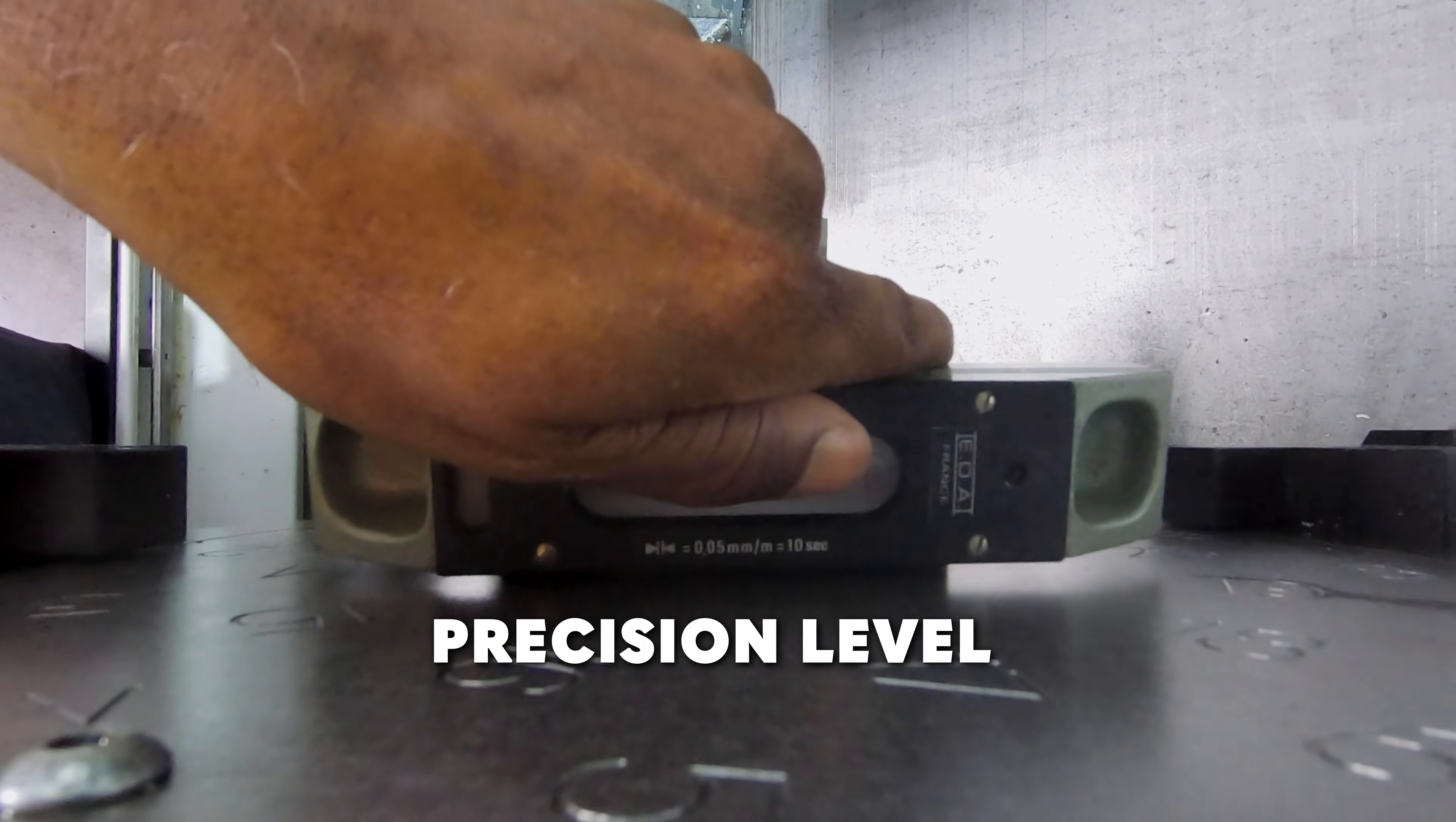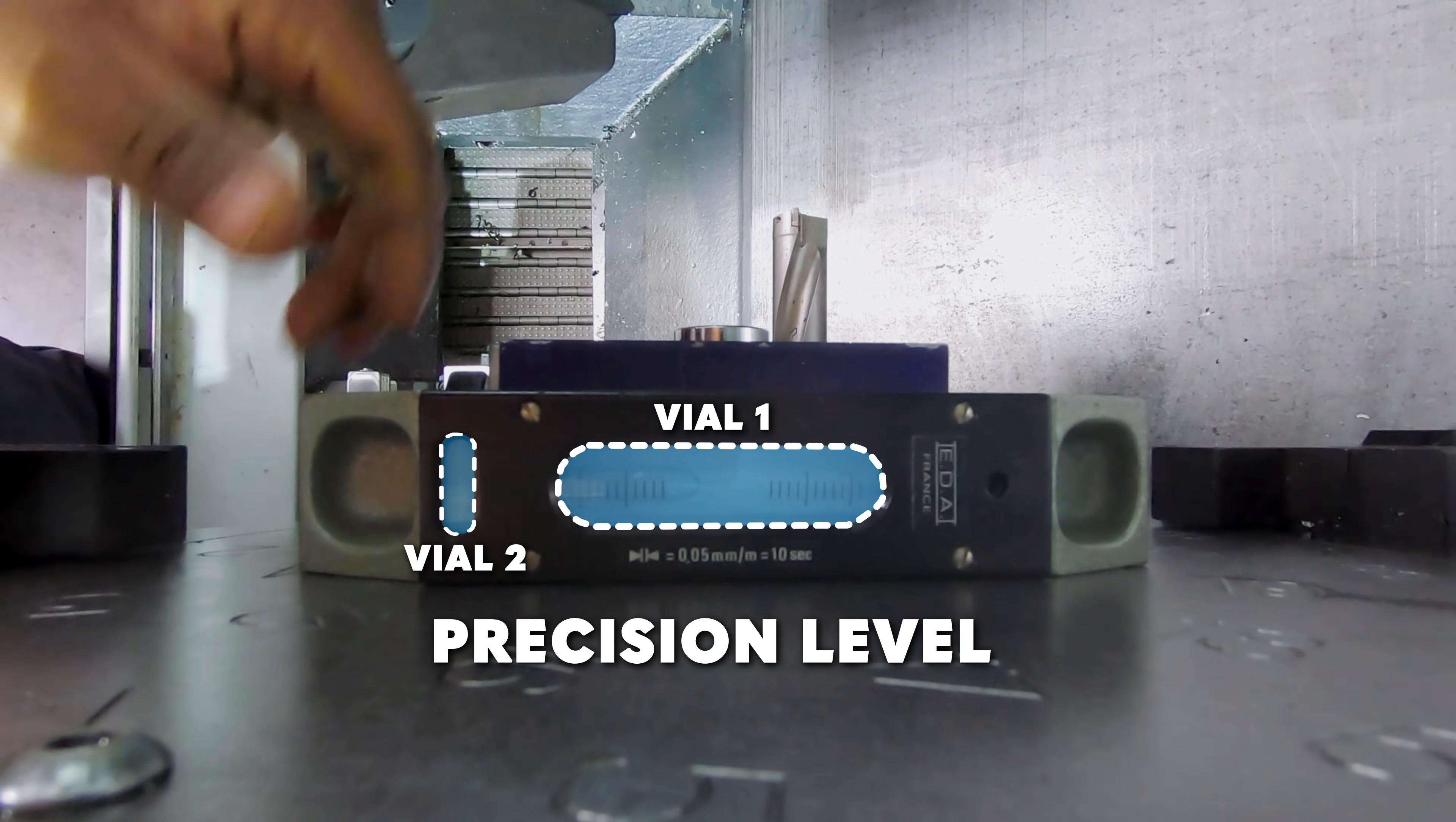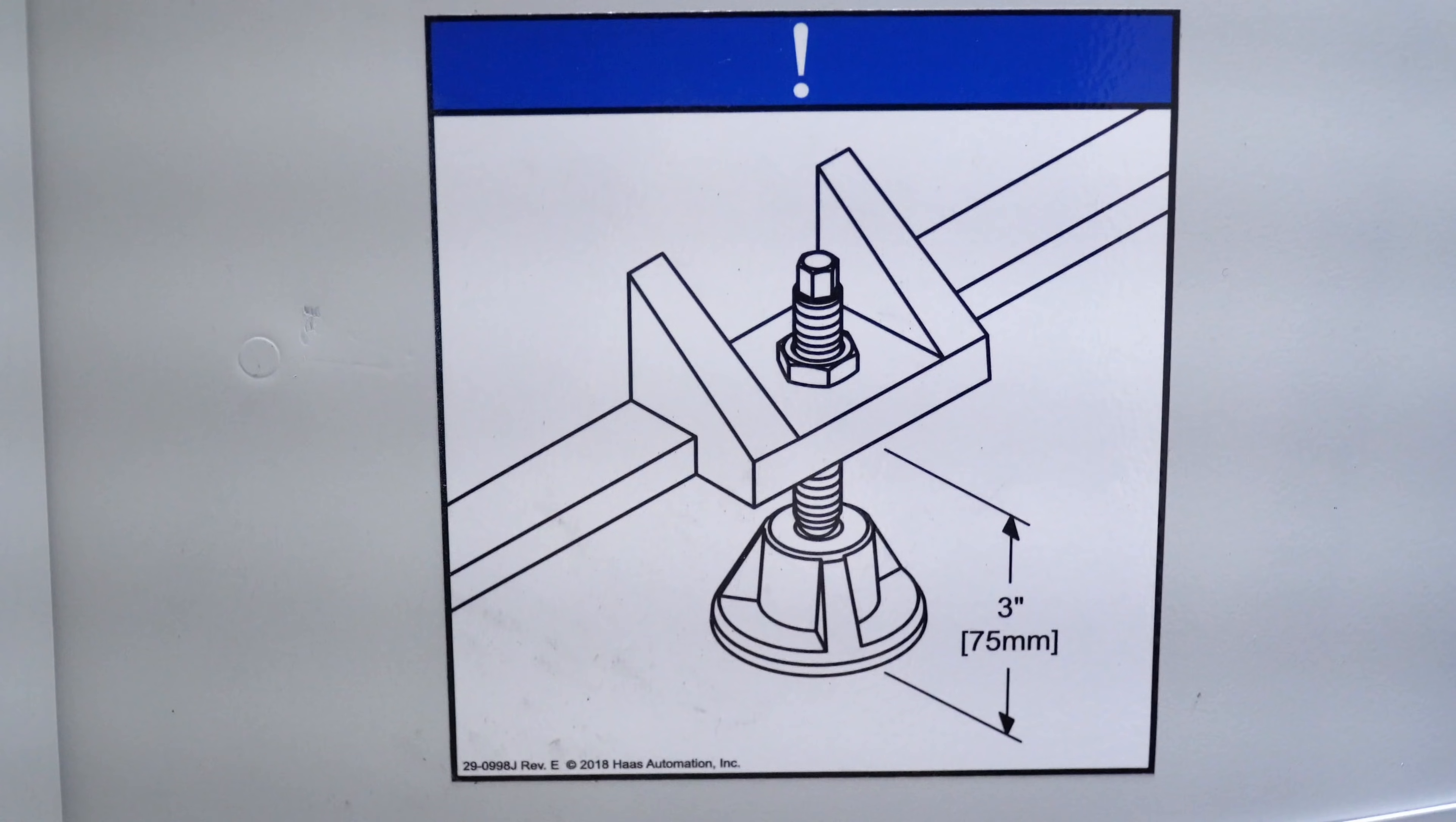We recommend using a machinist level with two vials. We'll start by making sure the machine is at the correct height as specified on the decal.